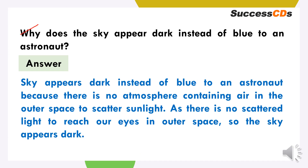The next question is: why does the sky appear dark instead of blue to the astronaut? Jab ek astronaut dekhta hai, toh wo dark colour ka sky dekhta hai because there is no atmosphere, there is no air. The atmosphere is not there containing air in outer space to scatter the light — as there is no scattered light to reach our eyes, isi liye sky dark colour ka dikhta hai.